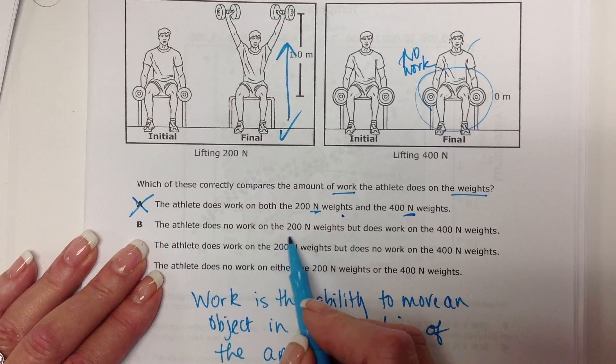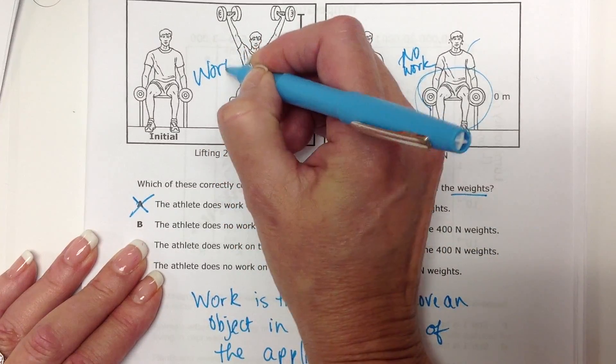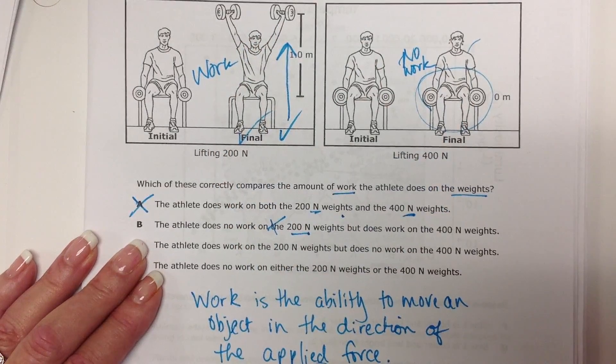Okay, the athlete does no work on the 200 Newton. That's wrong. This is where he is doing work, right? This is work. That's no work. So, that's not right.